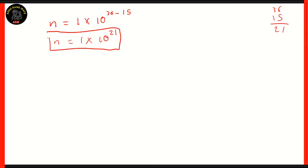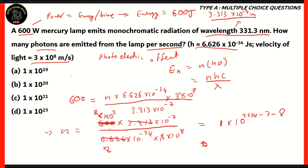So this will be the correct value for the number of photons emitted per second. The correct option among the following is option C, 1 into 10 raised to 21. All the other options are incorrect because the exponent is incorrect. Option C — 10 raised to 21 — is the number of photons emitted from the lamp, which emits a monochromatic radiation of wavelength 331.3 nanometers and which has a power of 600 watts.